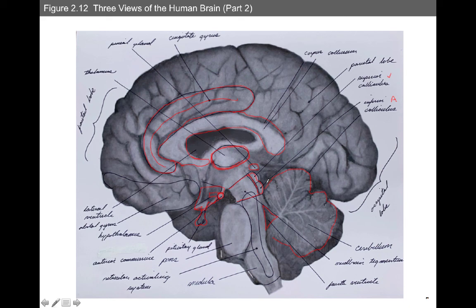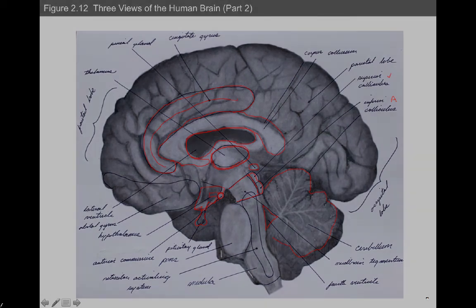We have this dark area here — another hollowed-out area filled with cerebral spinal fluid, not air. This is actually one of the ventricles. So these are some of the structures we're going to be talking about in this chapter.